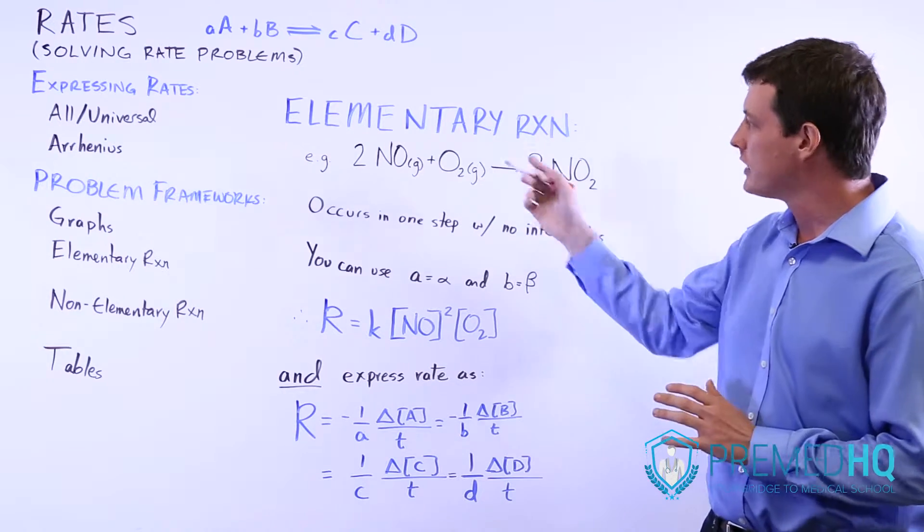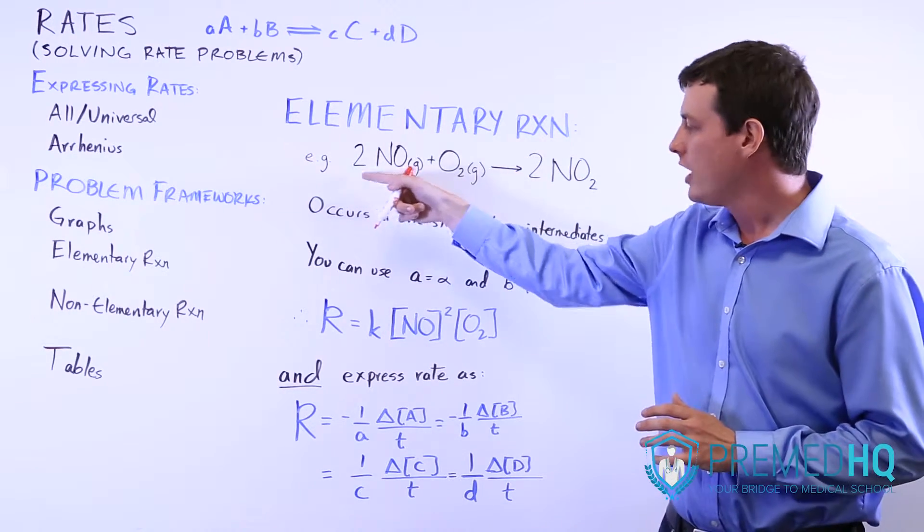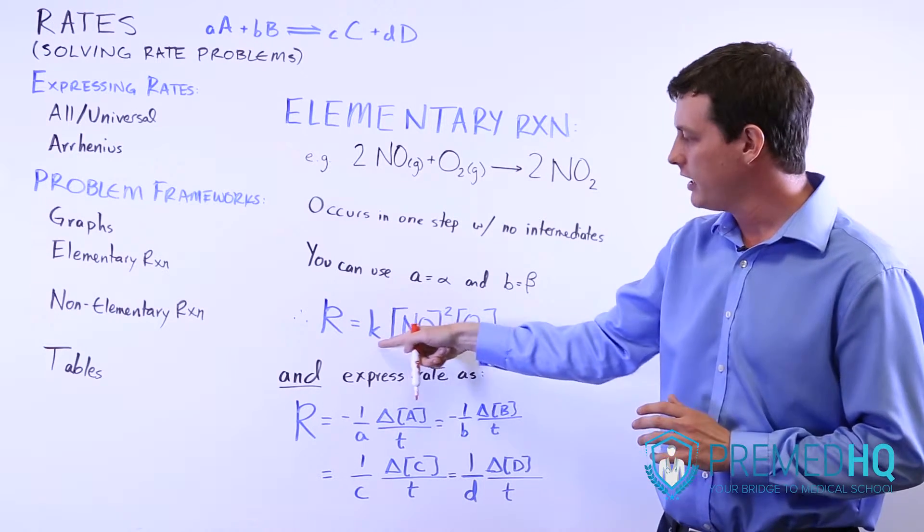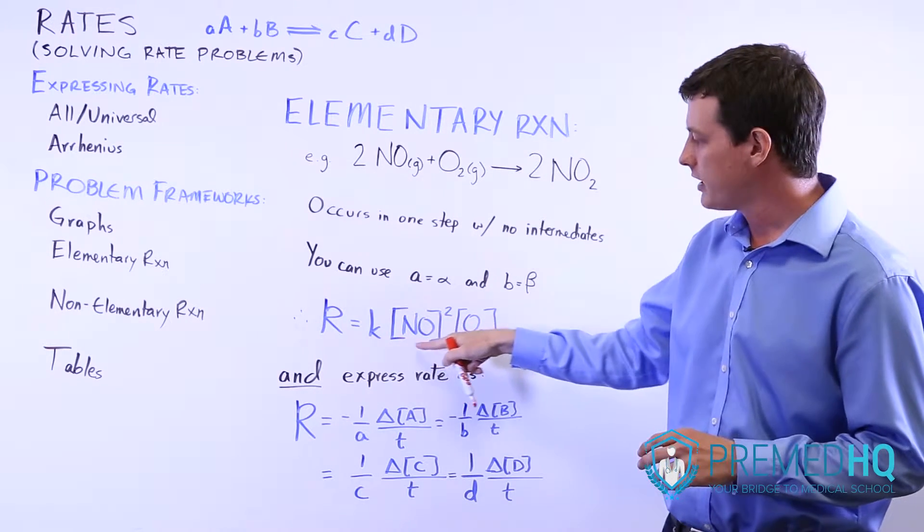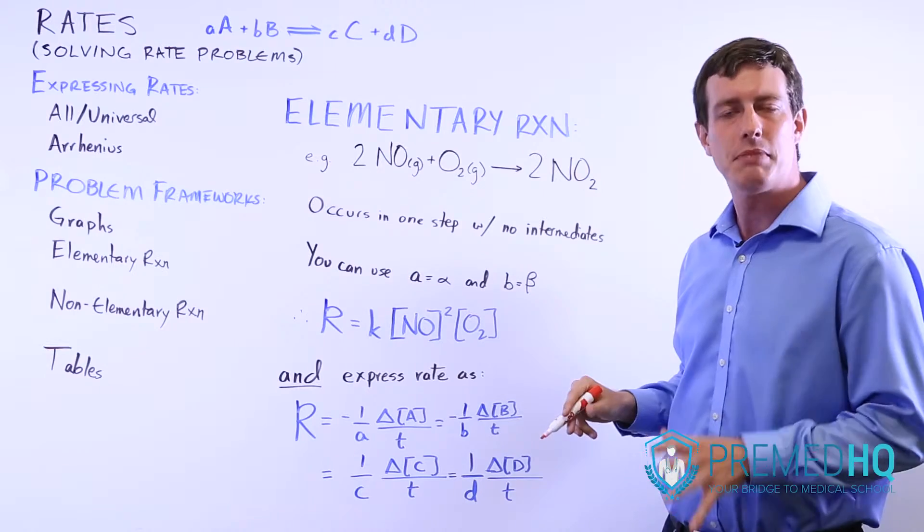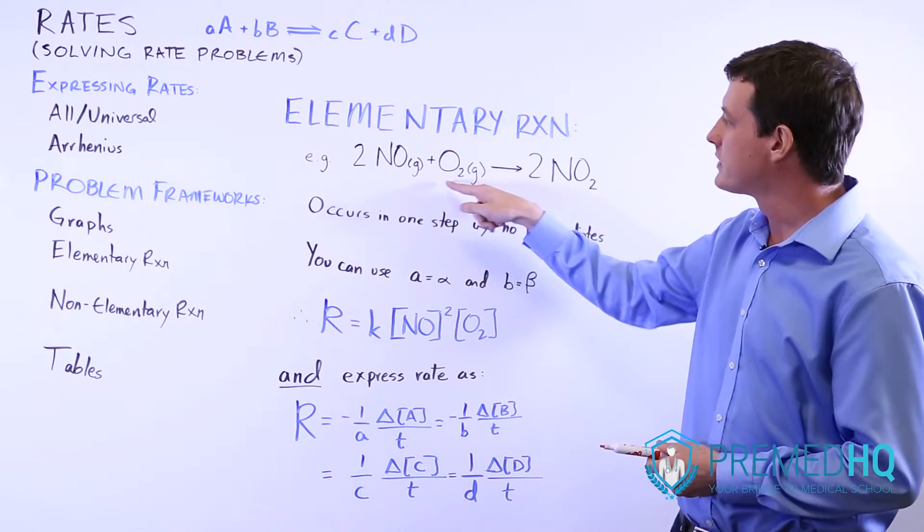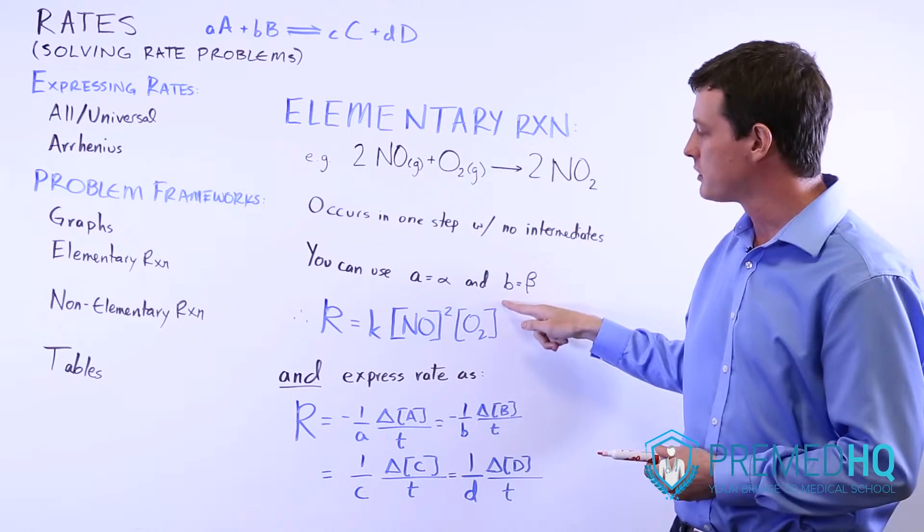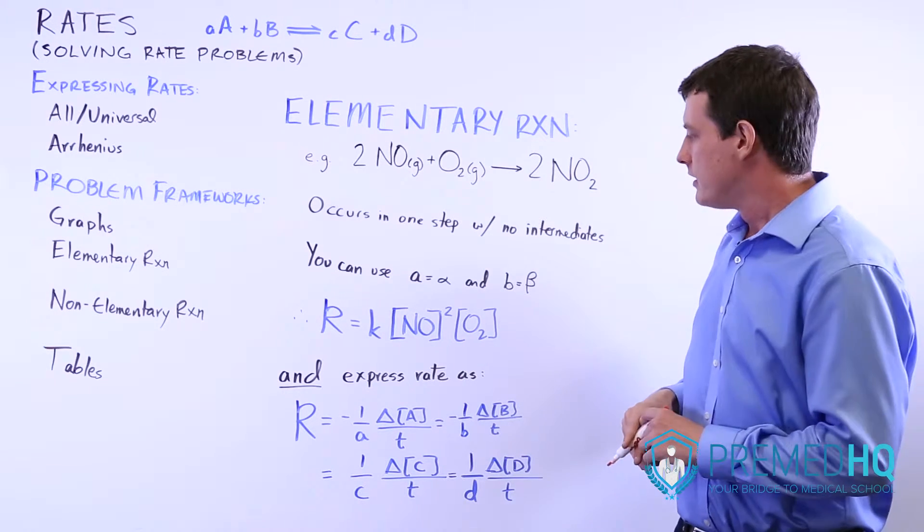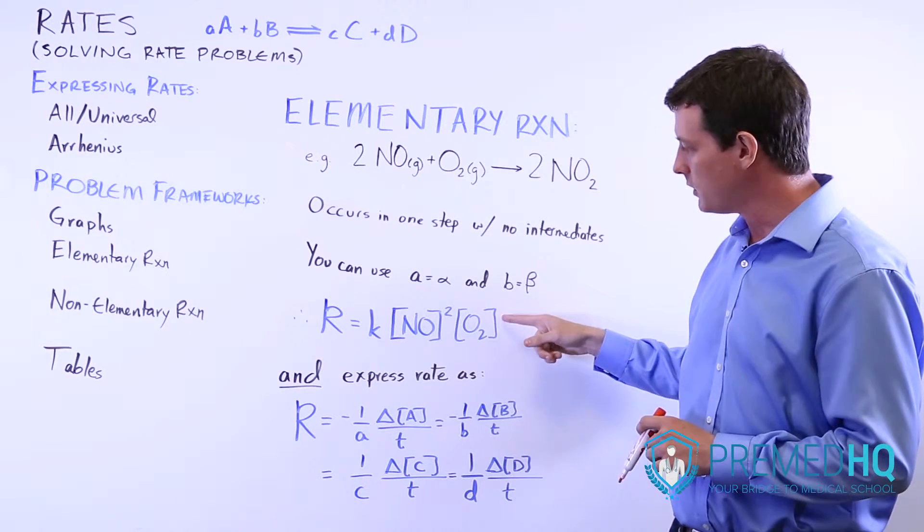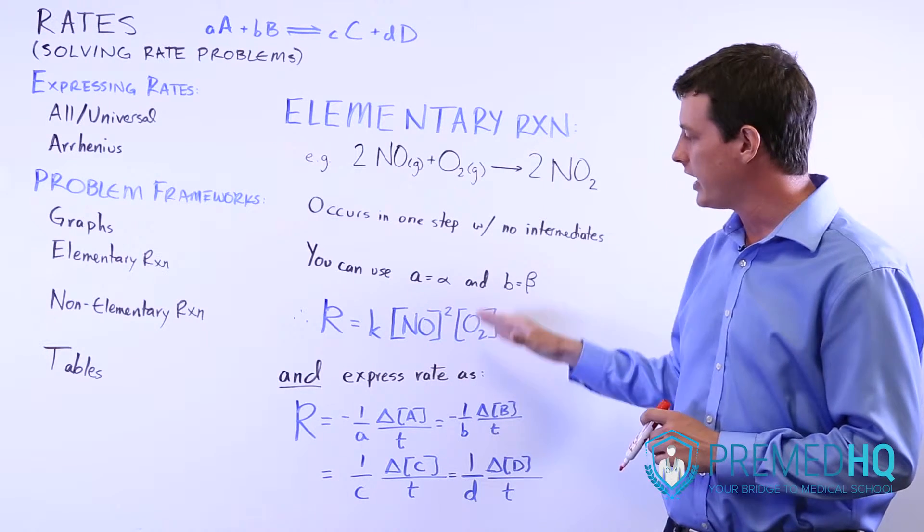For this reaction, because you have two NOs, the rate will be equal to K, which is some rate constant, times NO raised to the second power. So it's second order with respect to NO. You only have a single O2, so that O2 is raised to the first power. It's first order with respect to O2, second order with respect to NO.